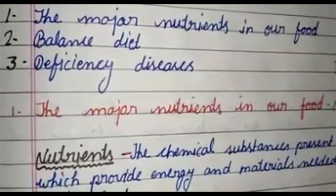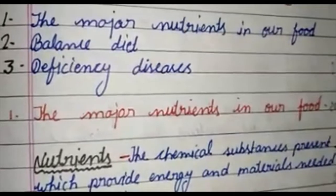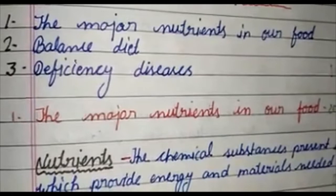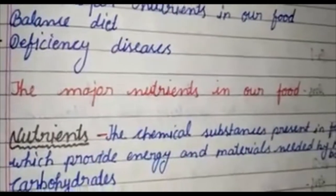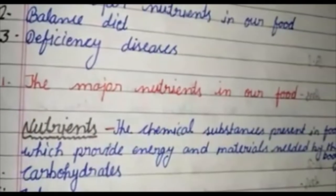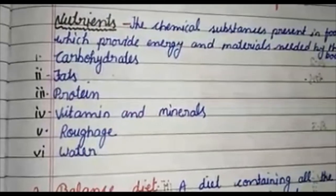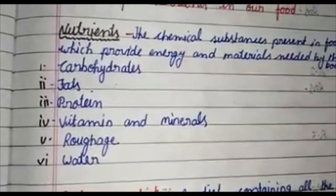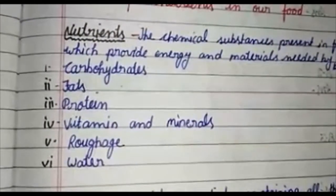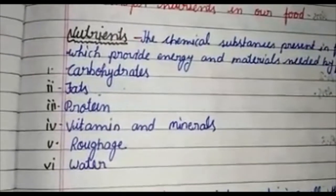The major nutrients in our food. First of all, we will know what are nutrients. Nutrients are the chemical substances present in food which provide energy and material needed by the body. The components of food are: first, carbohydrates; second, fat; third, protein; fourth, vitamins and minerals; fifth, roughage; and sixth, water.